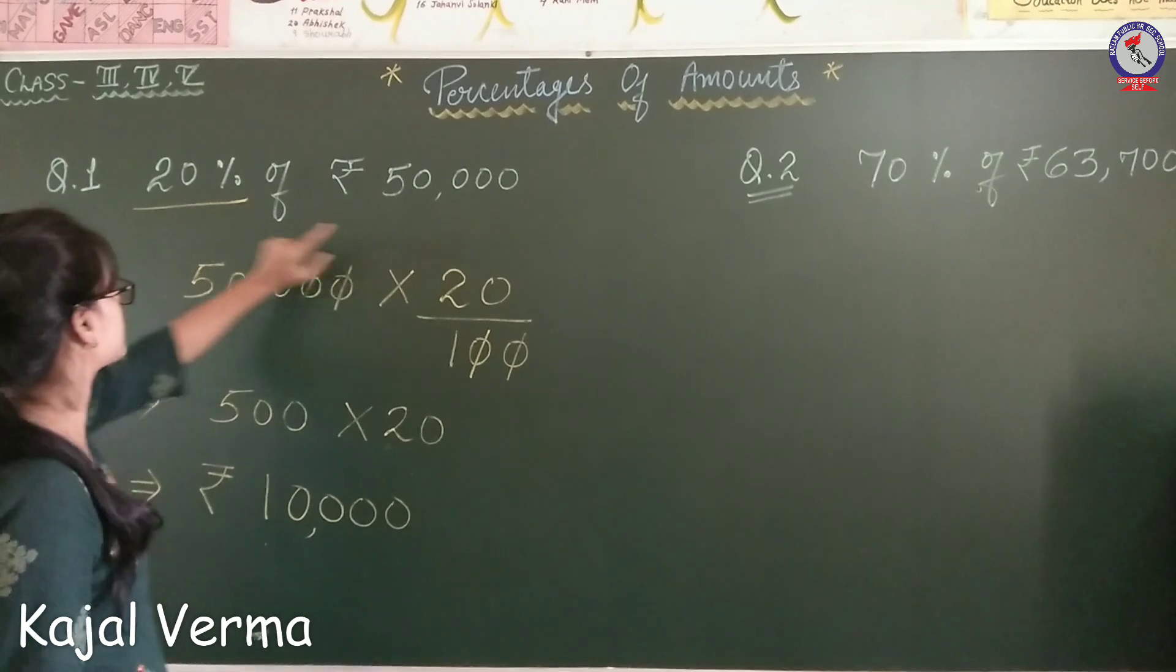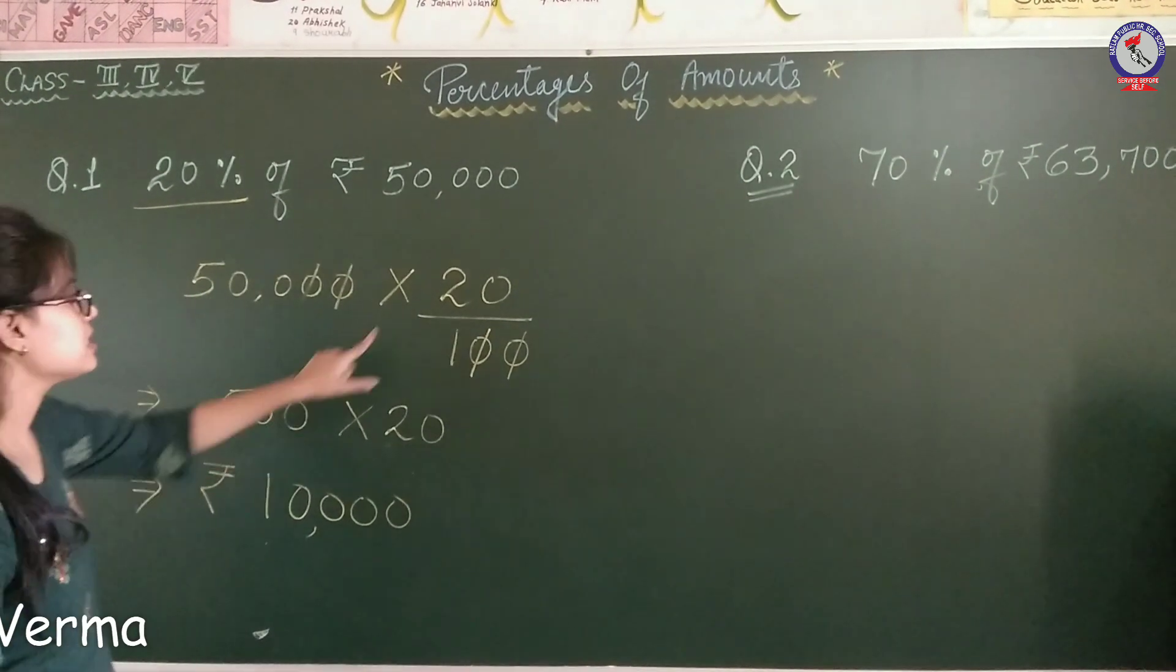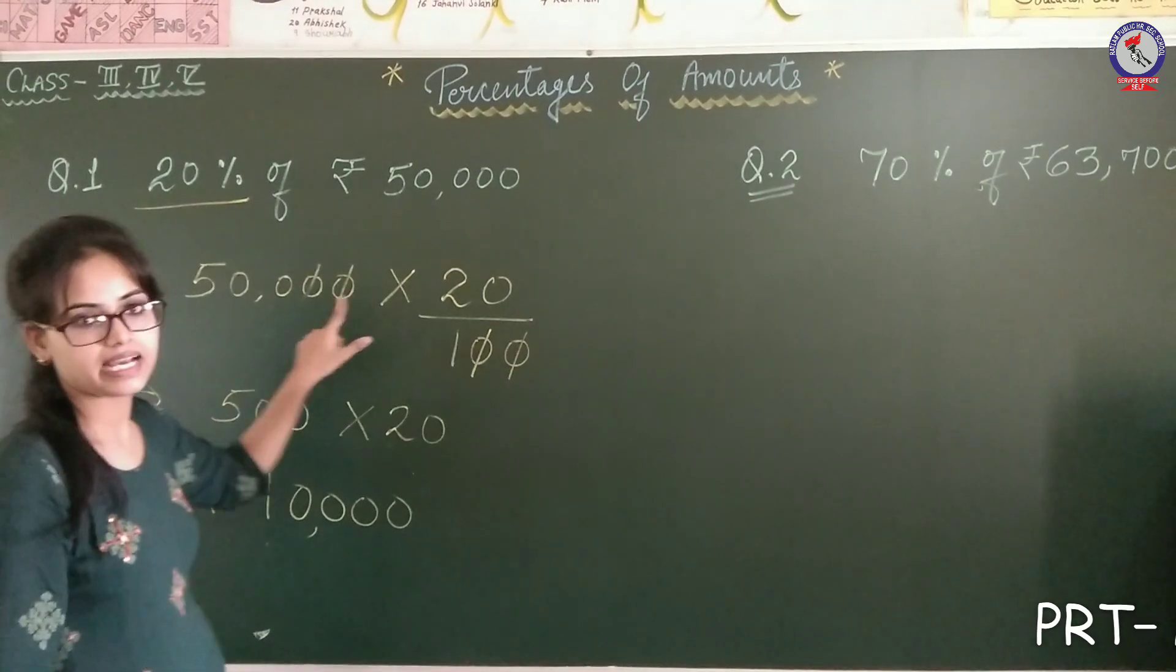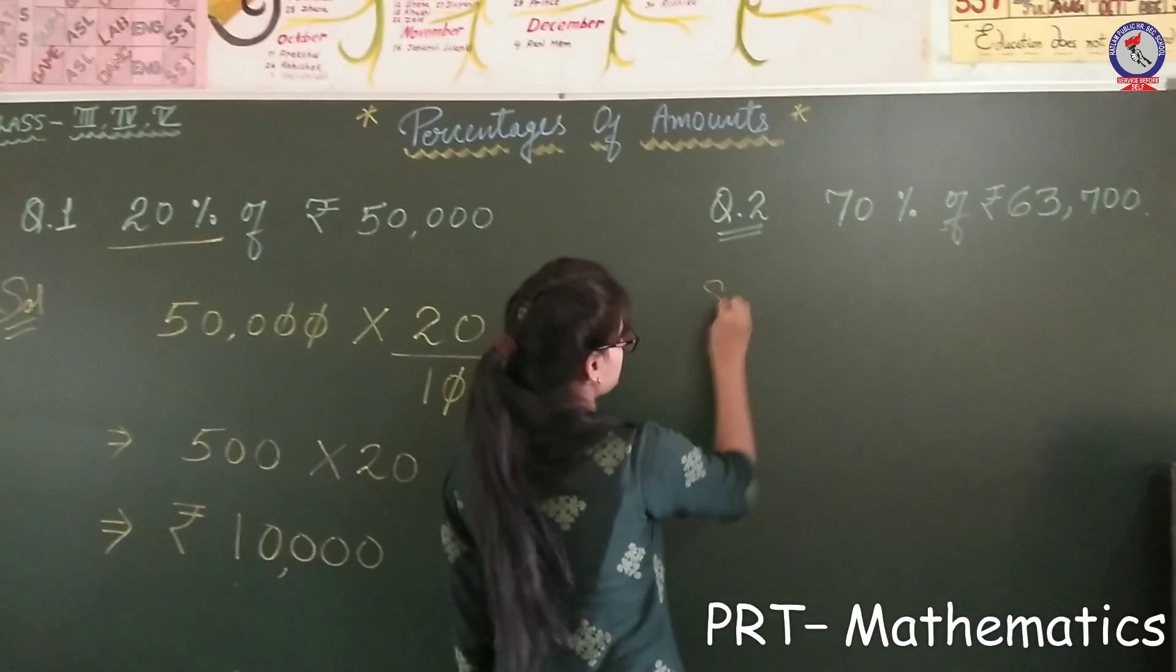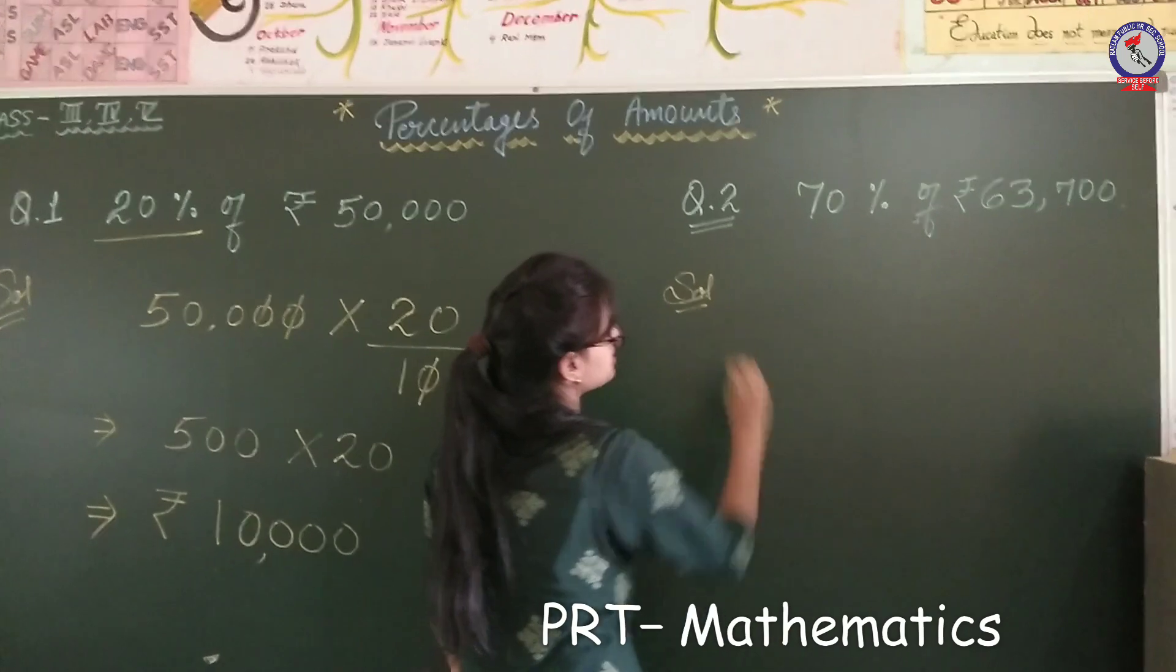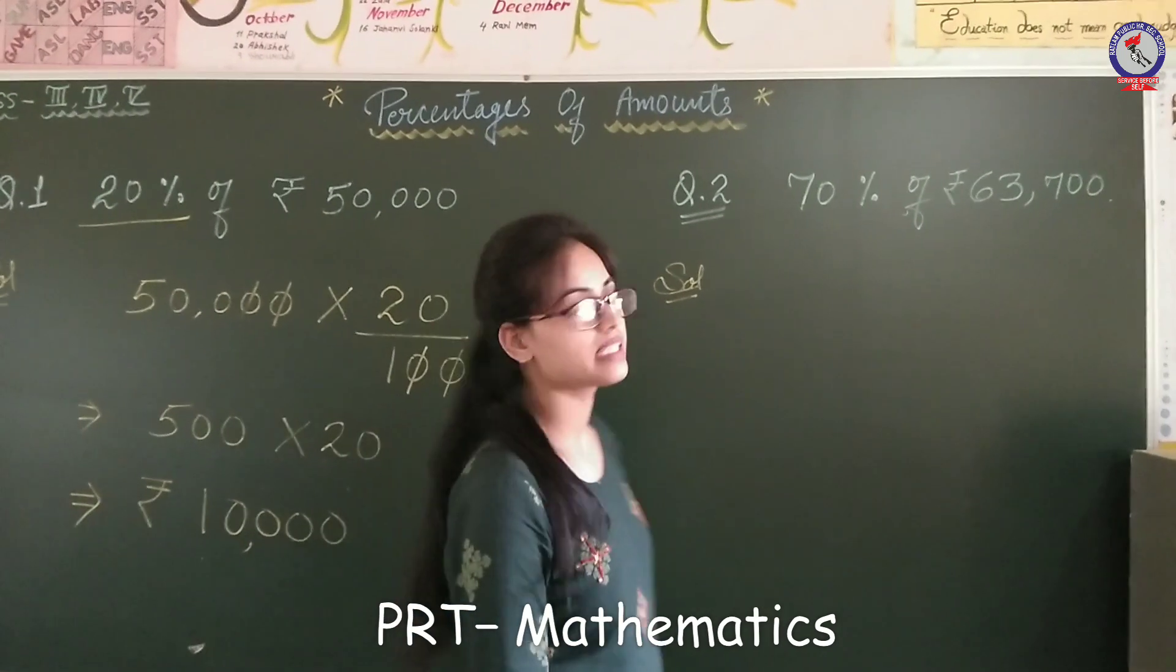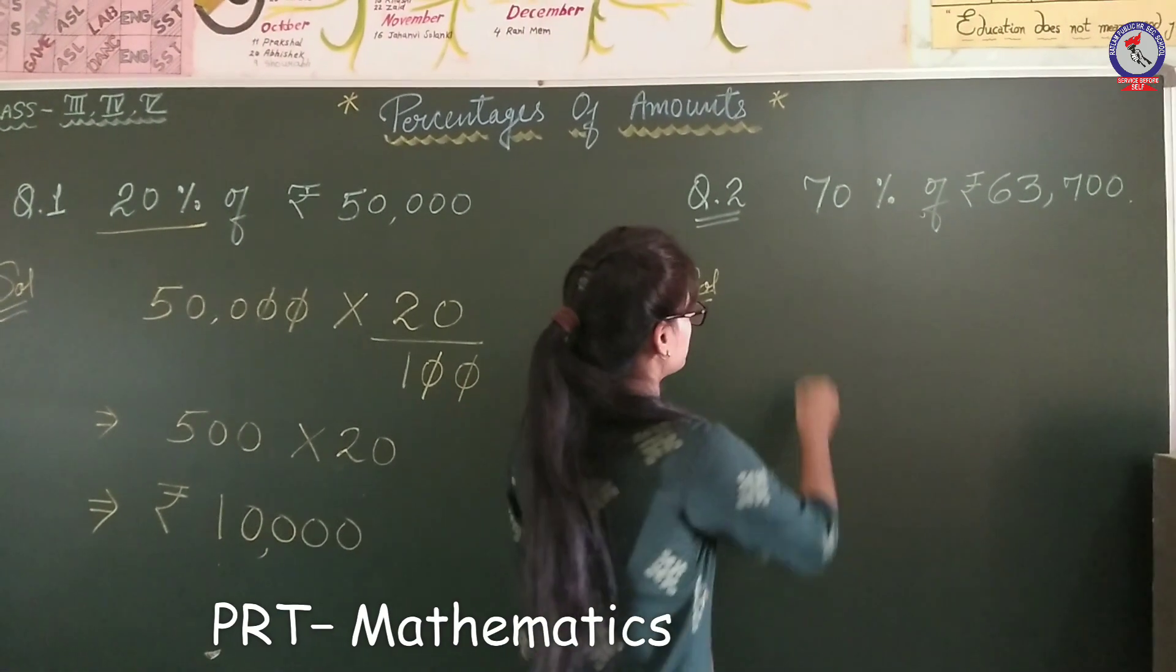So in the same way, we multiply by the percentage and divide by 100. For example, this is 70% of 63,700.